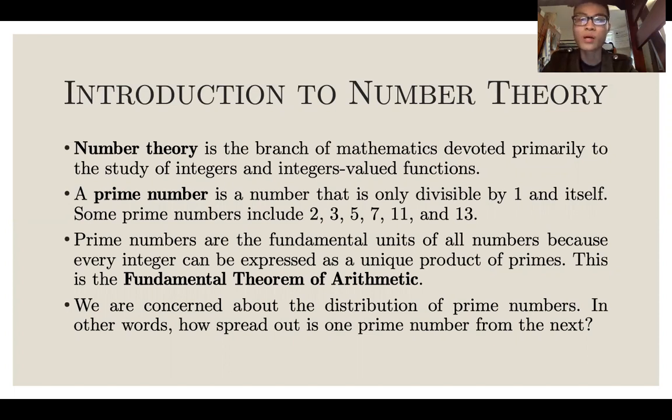Prime numbers, as you may know, are the numbers only divisible by one and itself. So, two, for example, is a prime number. Three is a prime number. Five, seven, eleven, and thirteen are all prime numbers.